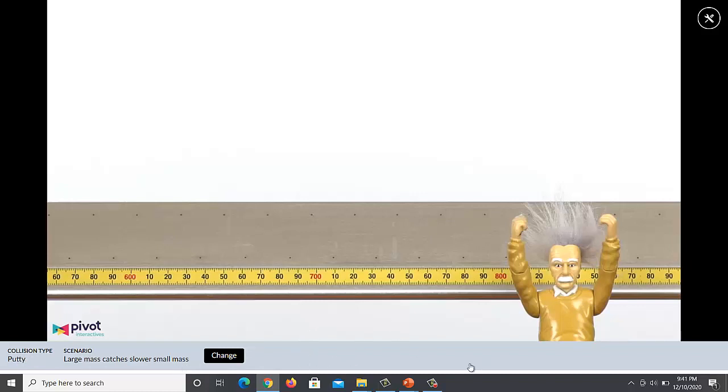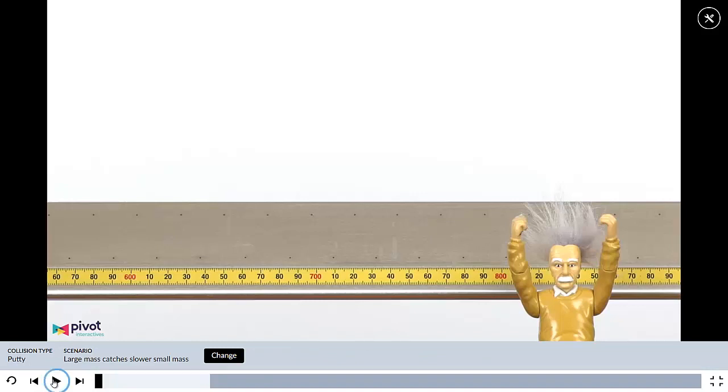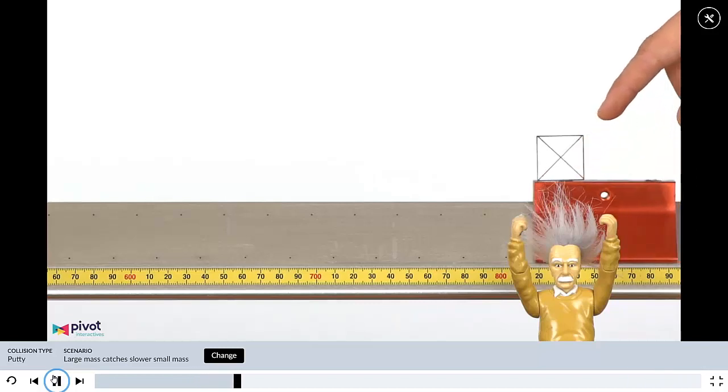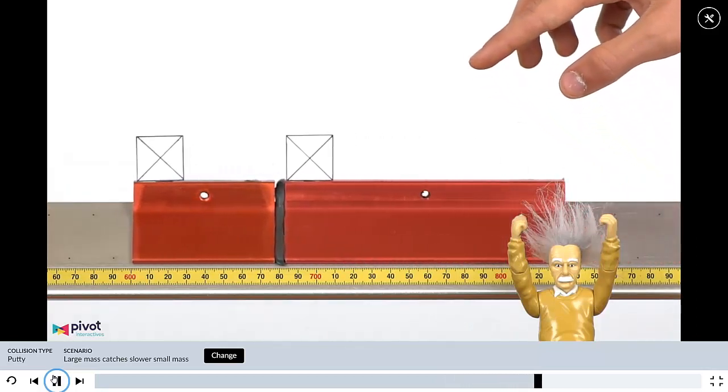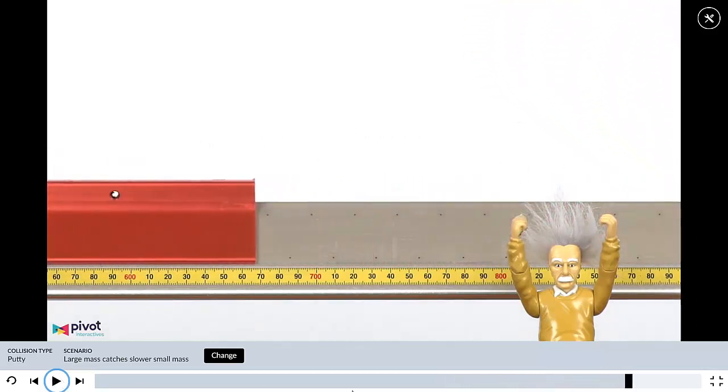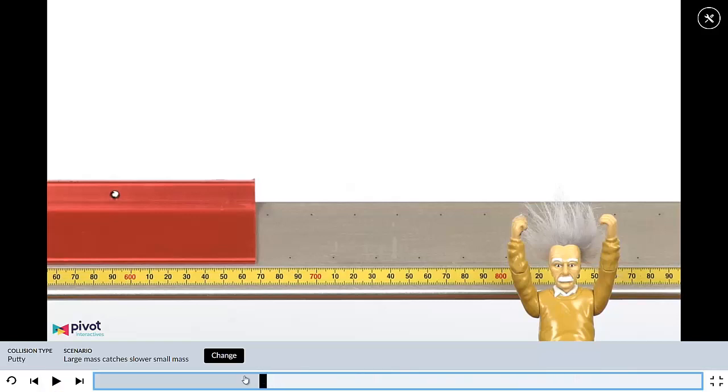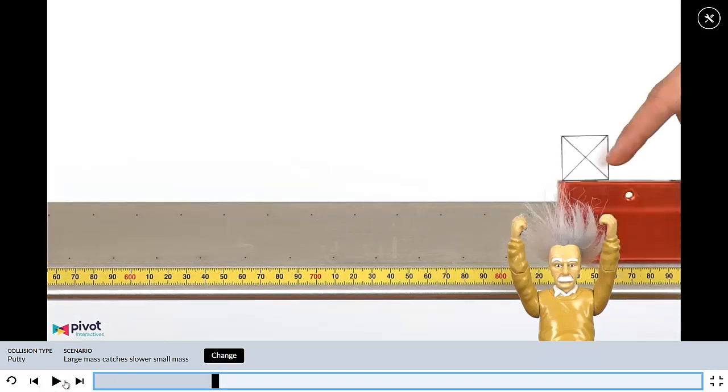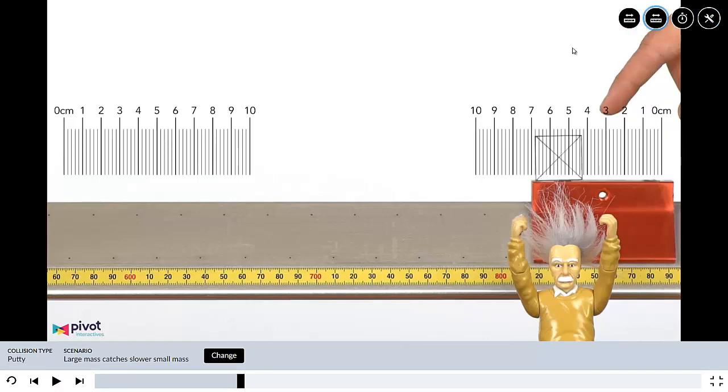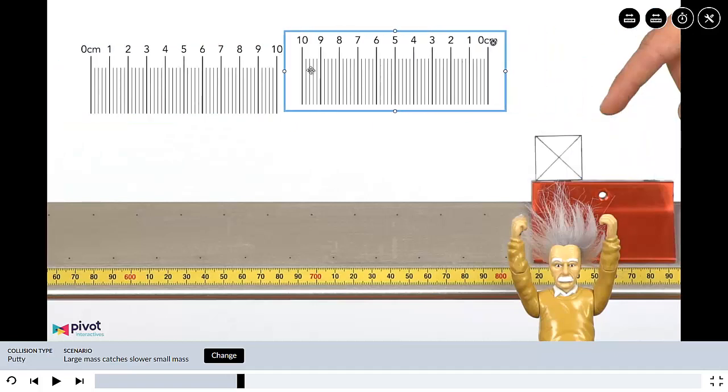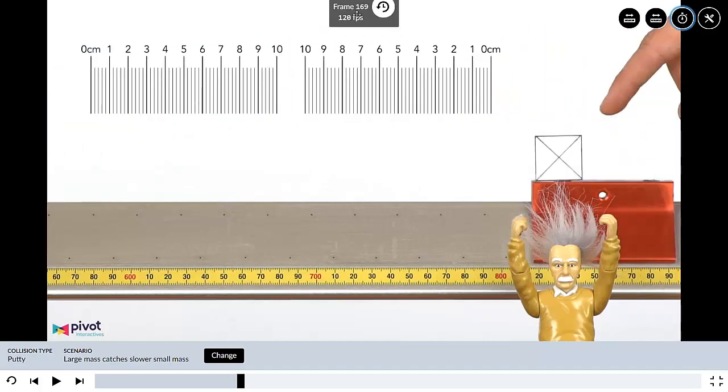So I want to start this. There it is. So now I can hit start. Here it comes. So he gives it a little push and lets it go. It travels along. Here comes the large mass, catches up, sticks to it, and off they go together. So if I take this back, I want to make sure it's after he lets go of it. And then here we have some tools we can use. There are two different rulers. The only difference between the two rulers is which side has the zero. And then there's a stopwatch we can use. Remember, the stopwatch can be reset so that any frame can be set as zero.